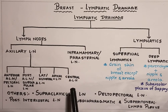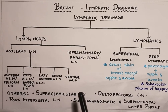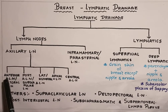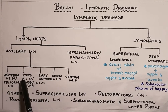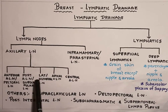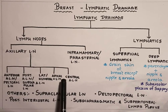The axilla is a four-sided pyramid with an apex, a base, and four walls: the anterior wall, the posterior wall, the medial wall, and the lateral wall. You'll find the anterior group of lymph nodes near the anterior wall, the posterior group near the posterior wall, the lateral group near the lateral wall, the apical group near its apex, and the central group near its base.